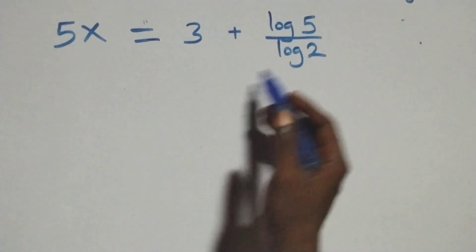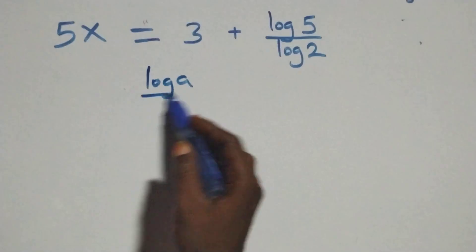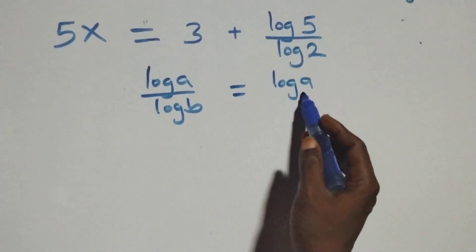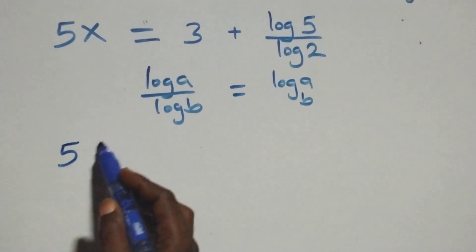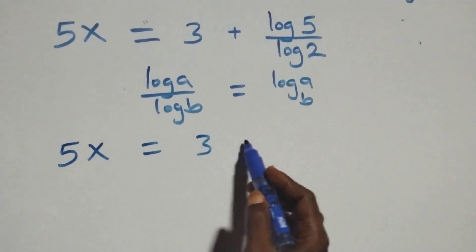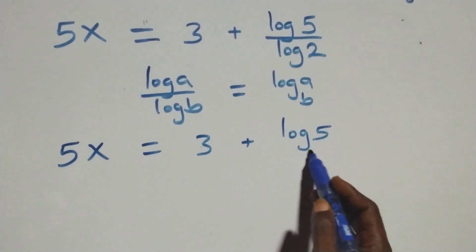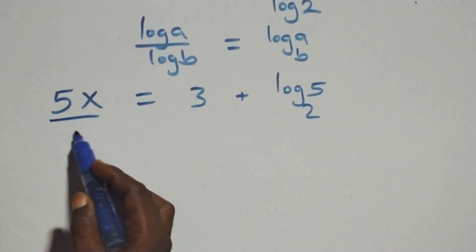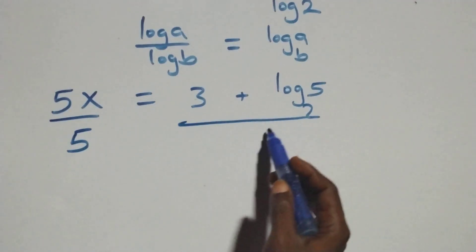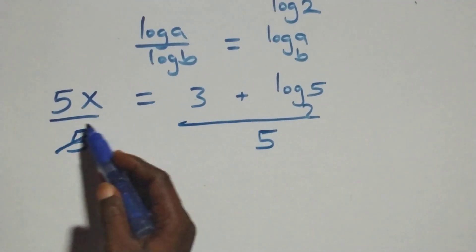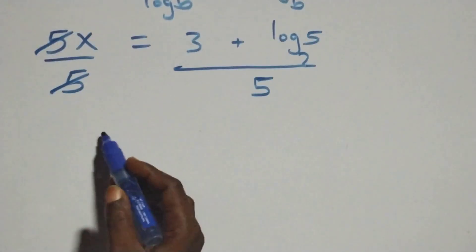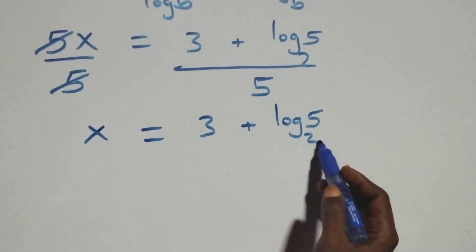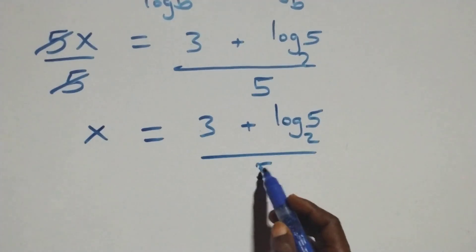Here we apply the change of base rule: log a over log b is the same thing as log a to base b. So this becomes 5x equals 3 plus log₂5. Then we divide both sides by 5 — the 5 cancels — and we have x equals (3 plus log₂5) over 5. That is the value of x.